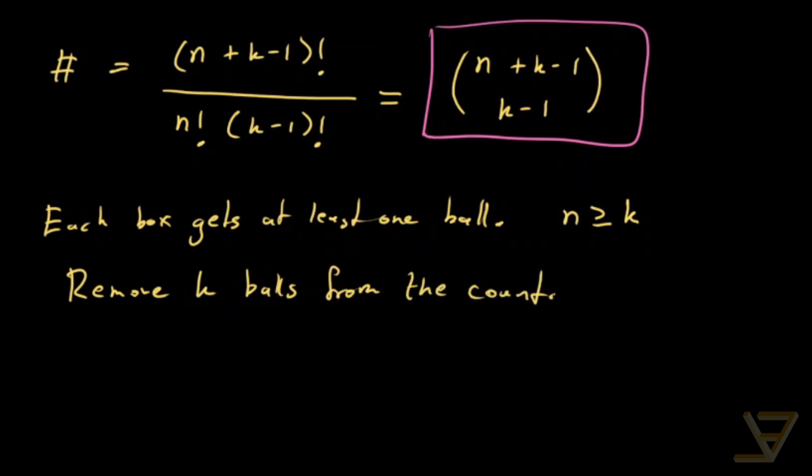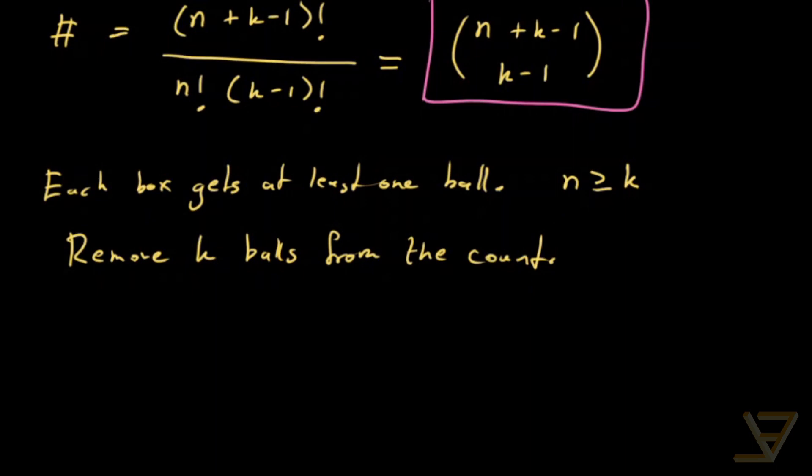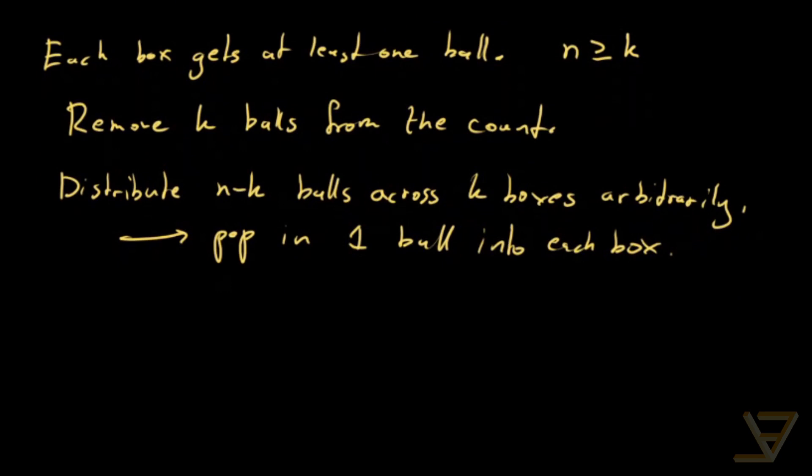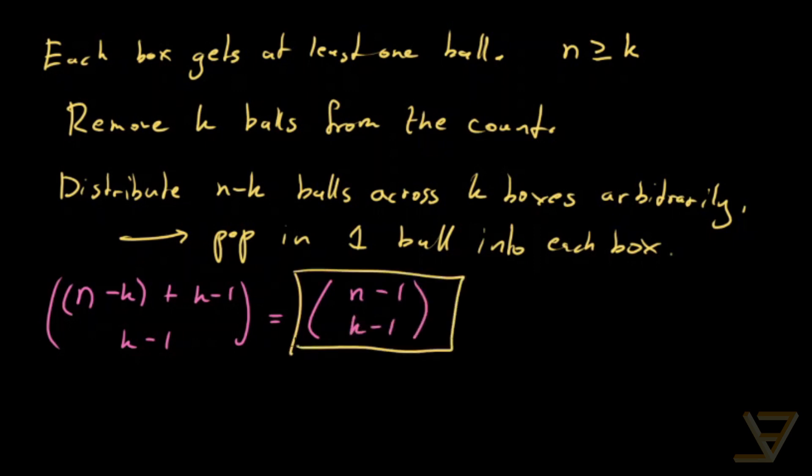Secondly, what we do is just remove K balls from the count. We're going to repeat the last part of the problem. Distribute N minus K balls across K boxes arbitrarily, and then pop in one ball into each box. This really just reduces to the last part of the problem. What we get is N minus K balls plus K minus 1 sticks, choose K minus 1. And that's equal to N minus 1, choose K minus 1. And that's the answer in the case that each box gets at least one ball.